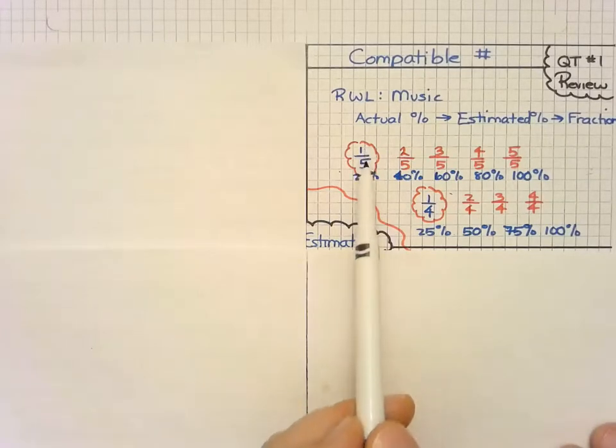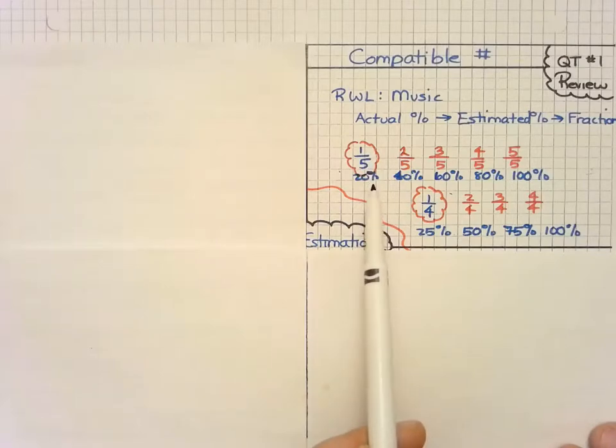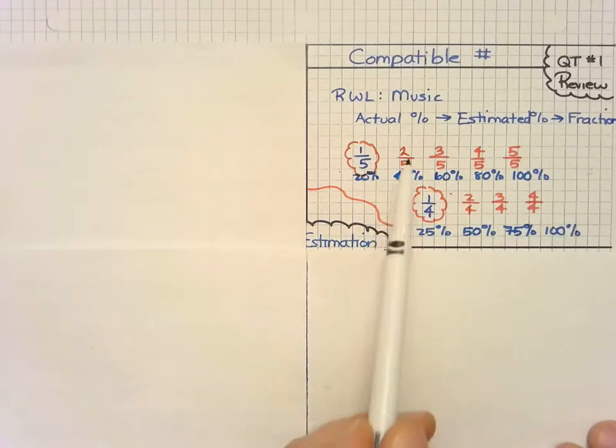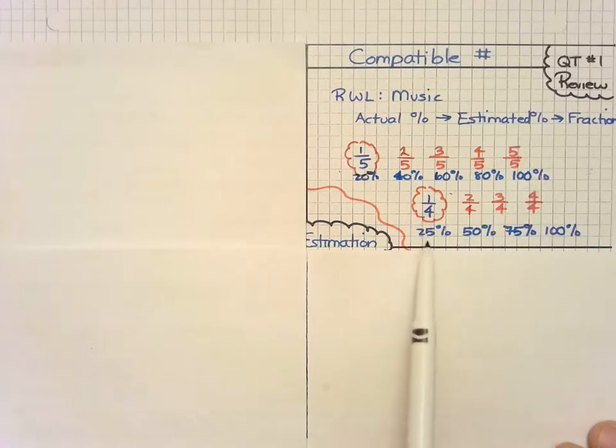So if we have one-fifth, we know that's 20%, and we can go back to our bar diagrams yesterday to review that. Then we have two-fifths, which is 40%, three-fifths is 60%, and so on. We can also take our quarters in money as well with our one-quarter, two-quarters, three-quarters, and four-quarters, which is a full dollar or 100 pennies.